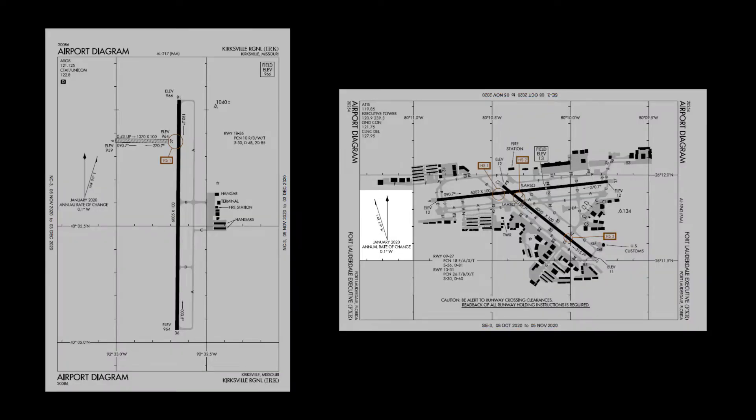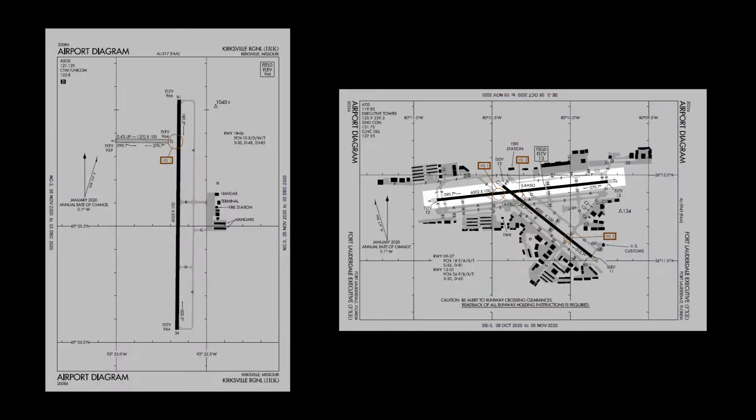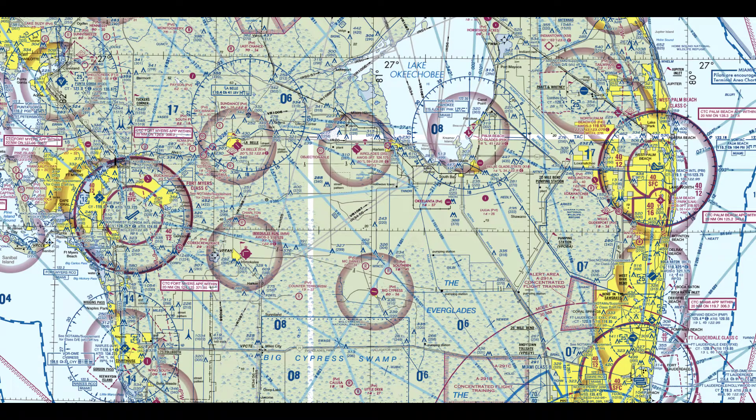Switching to the Fort Lauderdale Executive Airport, the magnetic variation is 6.9 degrees west. I learned to fly at Fort Lauderdale Executive many years ago and the runways were 08-26 and 13-31. You can see that today the runways are 09-27 and 13-31 because of the change in magnetic variation.